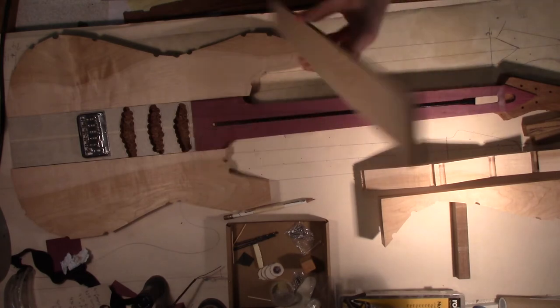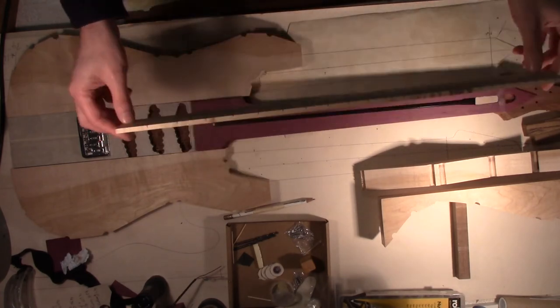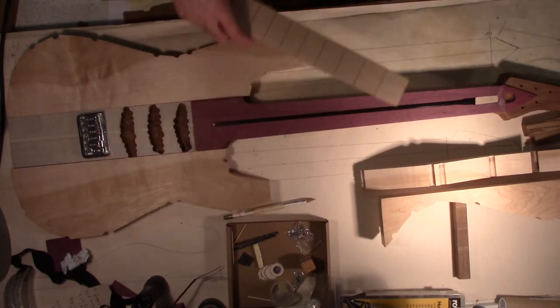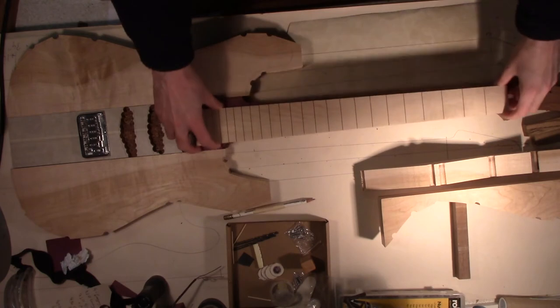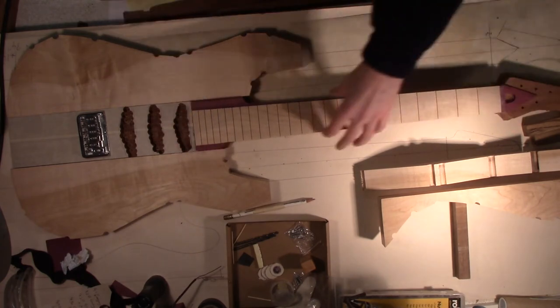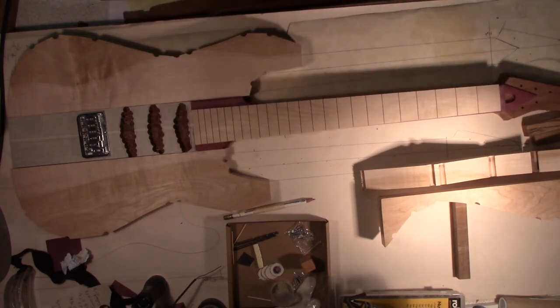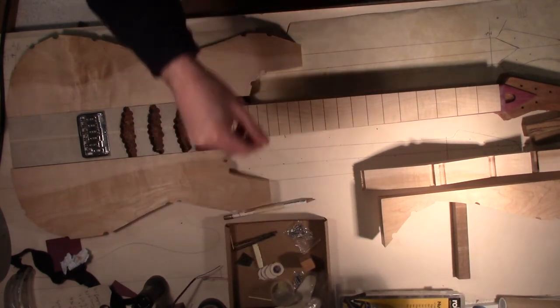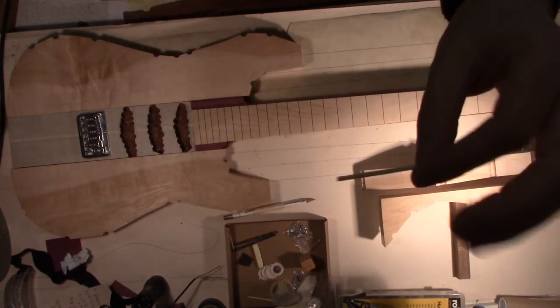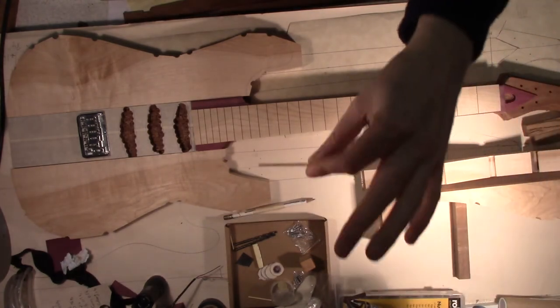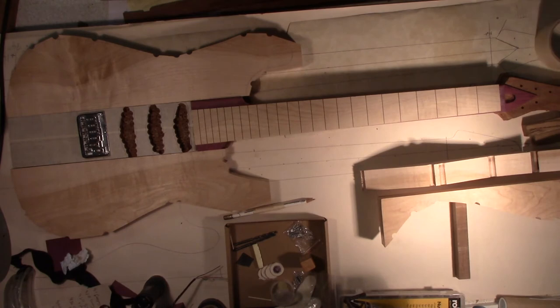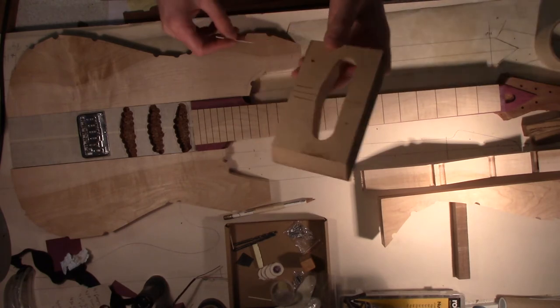The next stage is to glue the fretboard on. Now as we've trimmed the fretboard down to size before gluing it onto the neck, it is absolutely vital that we get it lined up perfectly. So I've got some cocktail sticks which are exactly 2mm thick, and I've got a drill that is exactly the same size.